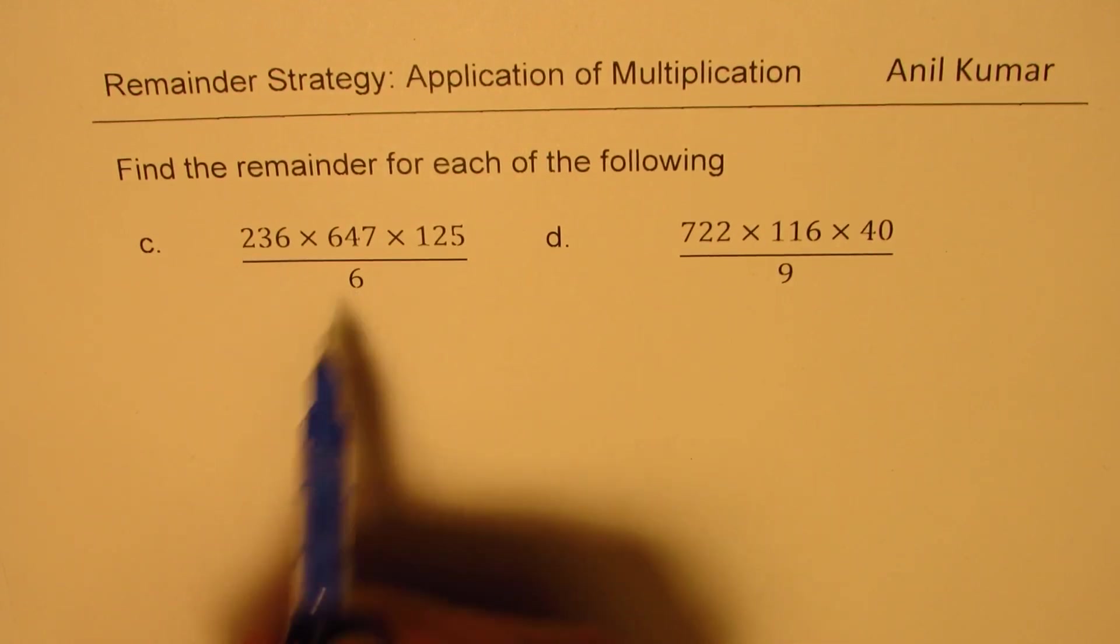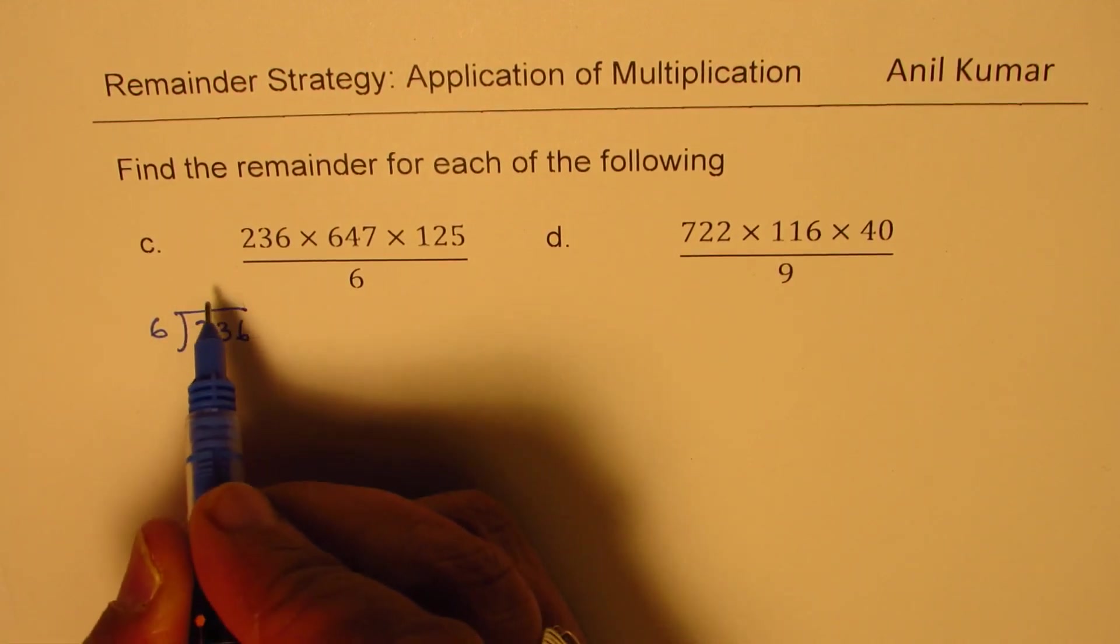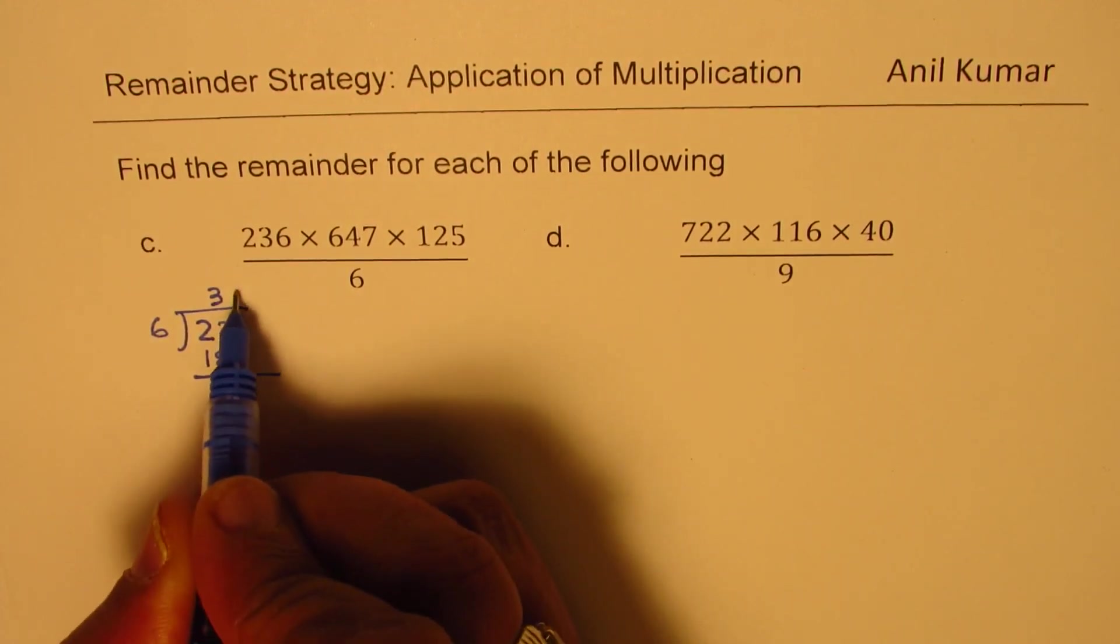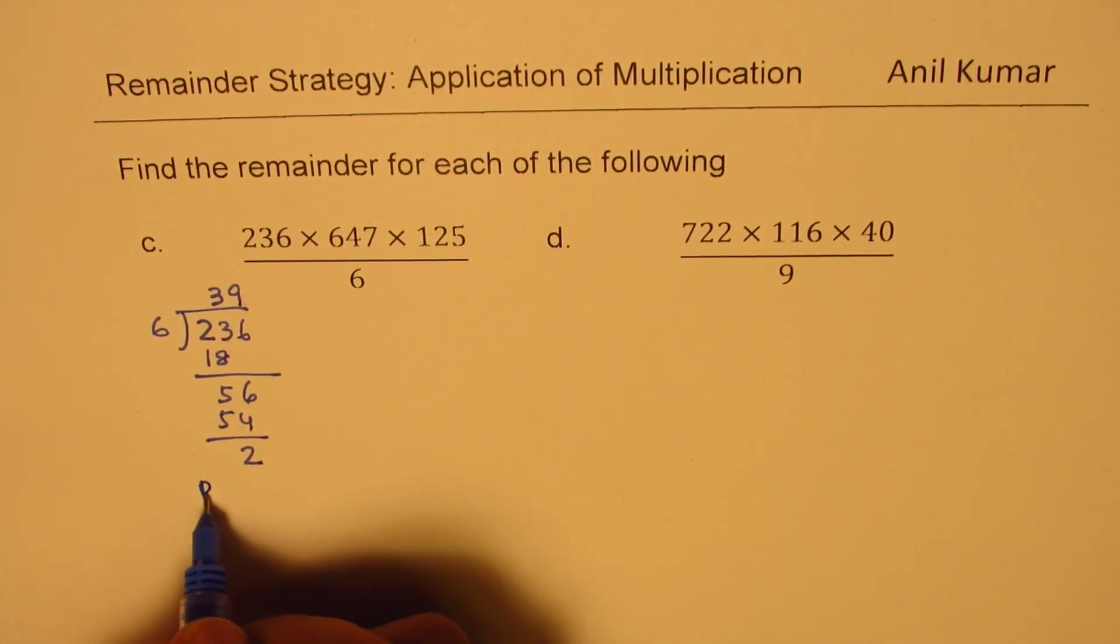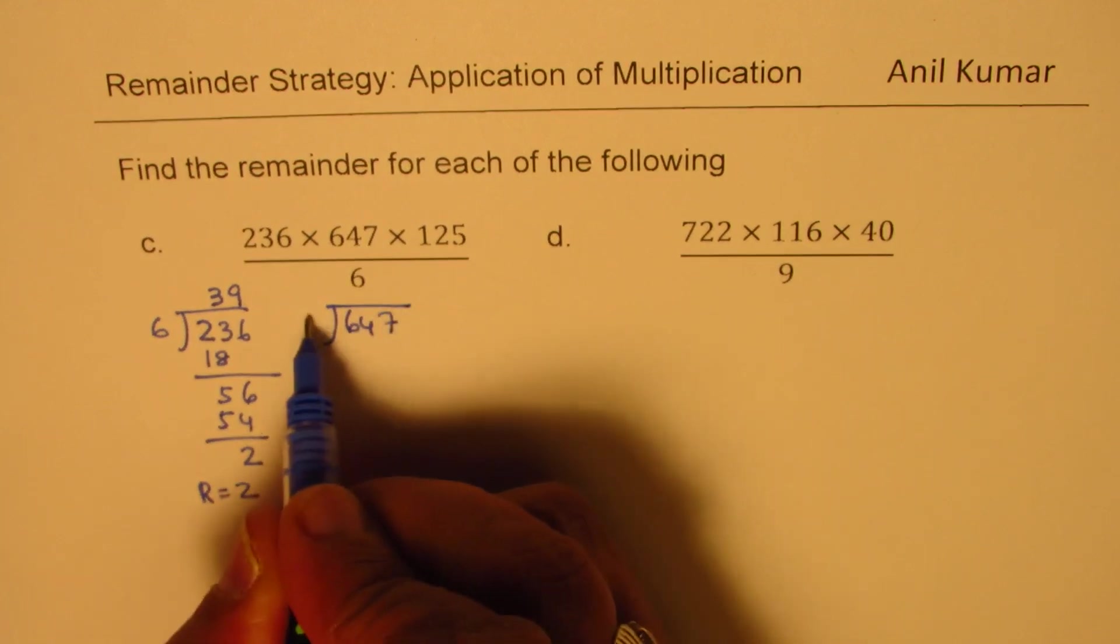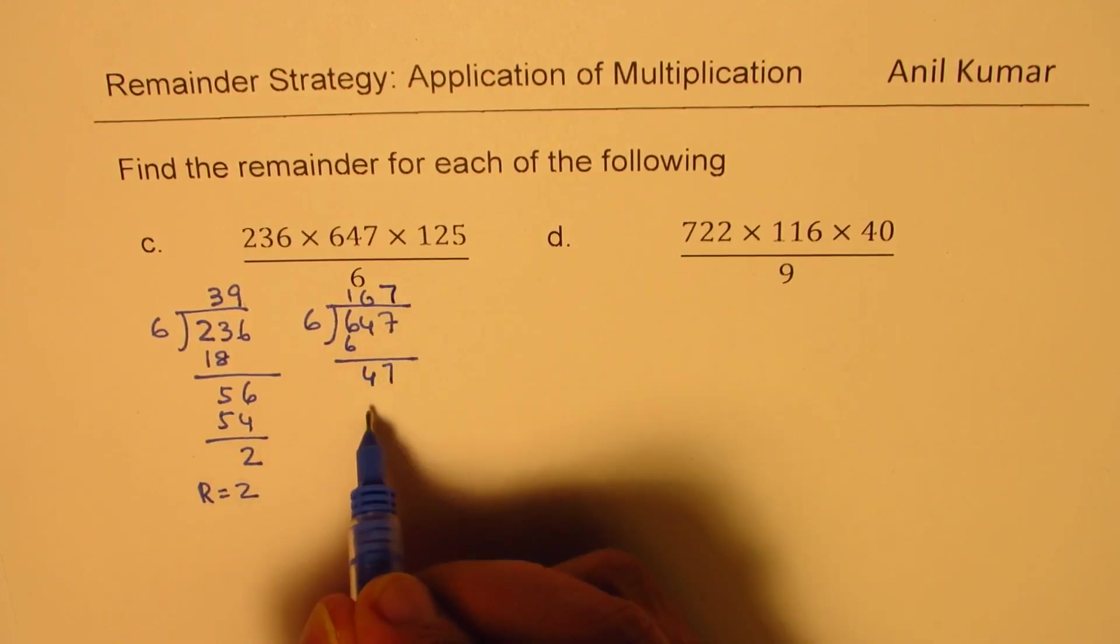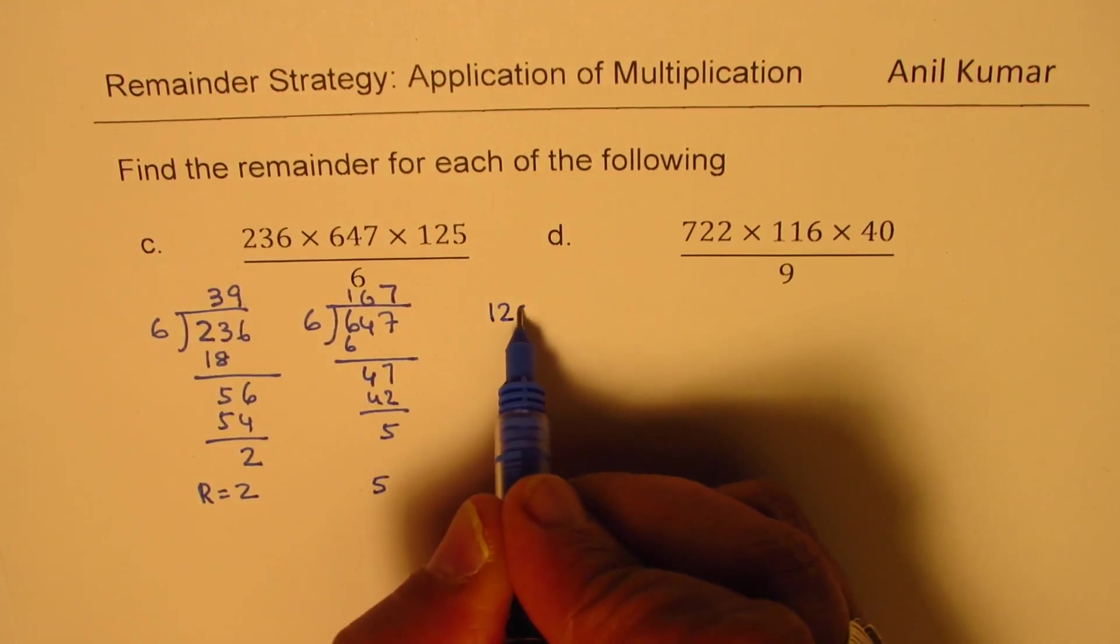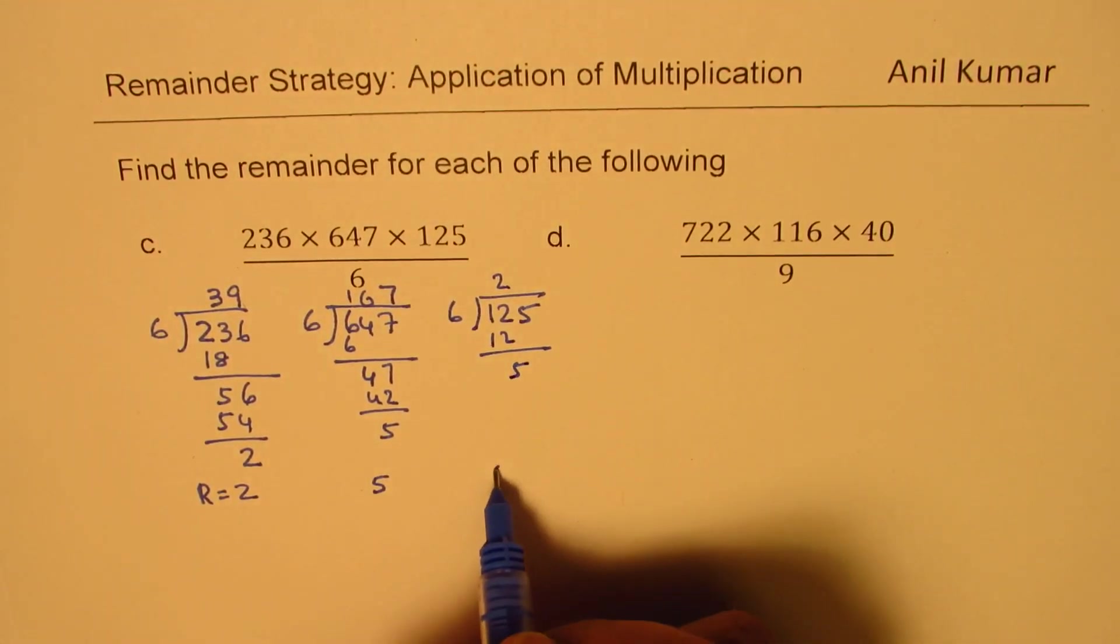So, if I divide 236 by 6, 6 times 4 is 24, but 3 is 18. So, we get remainder of 5, bring down 6. 6 times 9 is 54. So, the remainder in this case is 2. So we get first remainder as equal to 2. The second one, 647. When you divide this by 6, 6 times 1 is 6, so we get 4, 0, 7. 6 times 7 is 42. The remainder is 5. The second remainder is 5 for us. The third one, 125. When you divide by 6, remainder is 5. So we get 5 as the remainder.